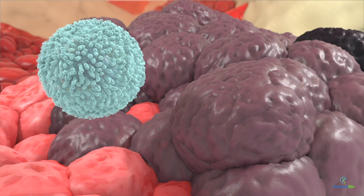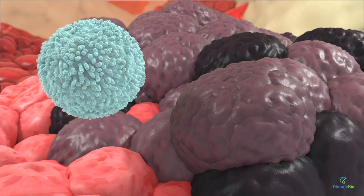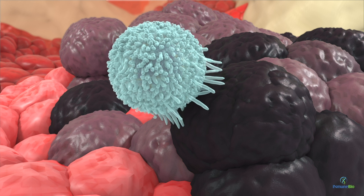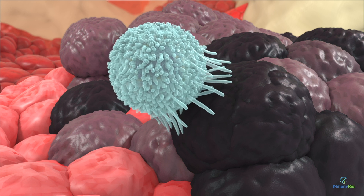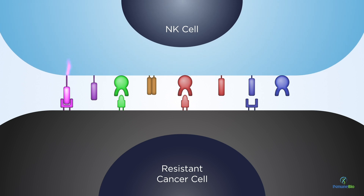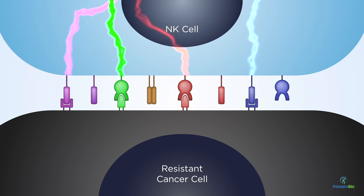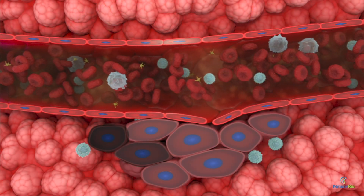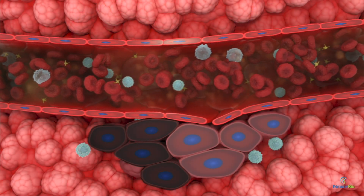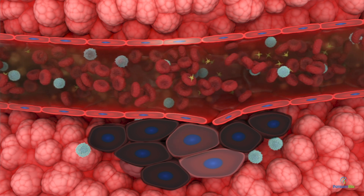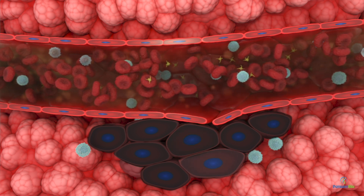But tumors evolve, and genetic changes can offer them a survival advantage by losing expression of the molecules that NK cells recognize. These NK-resistant tumor cells lack sufficient ligands to activate NK cells. The resistant tumor cells become more prevalent, and a growing tumor ignored by NK cells can lead to the development of cancer.